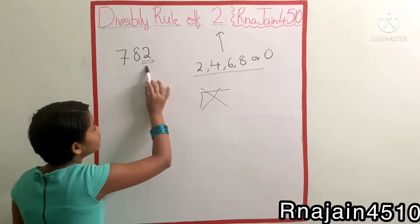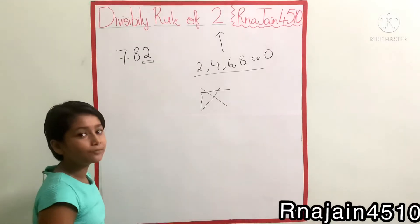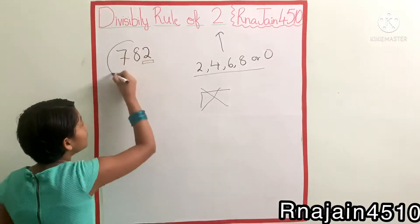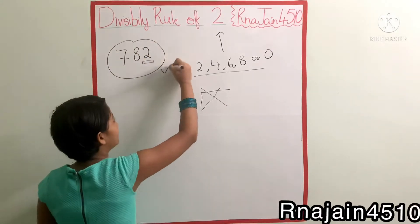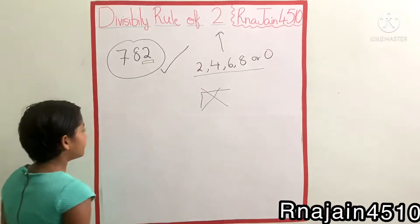So does it have 2, 4, 6, 8, or 0? Yes, it does have two. So this full number is divisible by two.